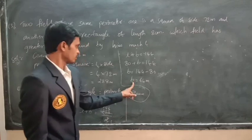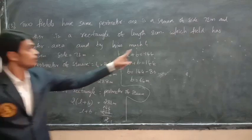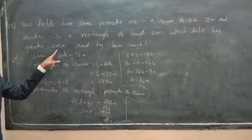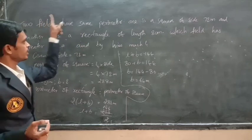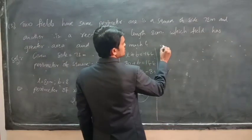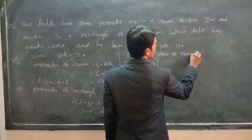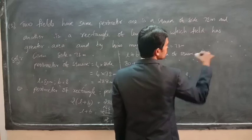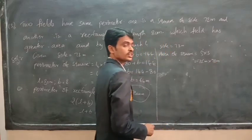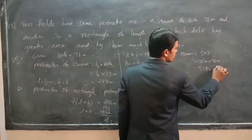Now we have breadth and length of the rectangle. We have to find which field has greater area. Area of square equals side into side equals 72 into 72 equals 5184 square meters.